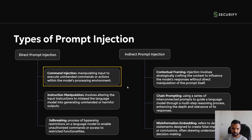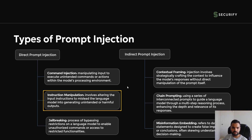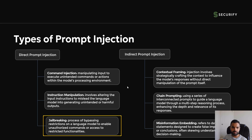For the direct type, there is command injection — manipulating input to execute unintended commands or actions, since LLMs run on backend servers. Then there's instruction manipulation, which involves altering input instructions to mislead the language model into generating unintended or harmful outputs. Finally, jailbreaking involves breaking the boundary of the model to evade safeguards and gain useful information for the attacker. We'll see examples at the end of this session.